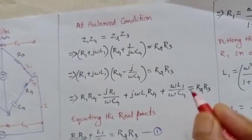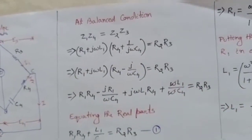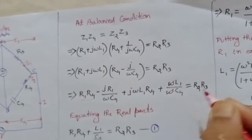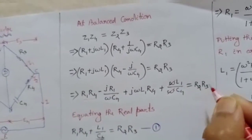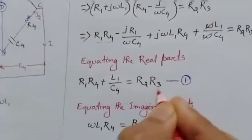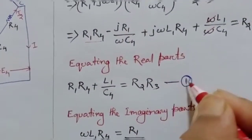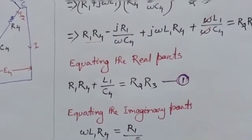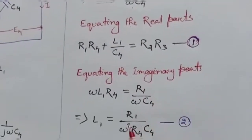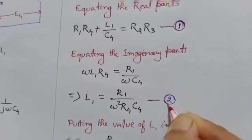Equating the real parts, the ω terms cancel each other out, giving us: R1·R4 + L1/C4 = R2·R3. This is equation number one. Similarly, equating the imaginary parts, we get the value of L1. However, both L1 and R1 are unknown parameters, and both equations contain these two unknowns, so this is not the final solution.